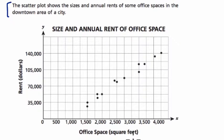So you have the office space, the square feet, versus how much you're going to pay for rent. So I'm just going to look at one point to get a sense of what I'm dealing with here. This point here tells me that if I'm over 4,000 square feet, I'm going to pay over $140,000 in rent. And that's annual rent, so that's per year.